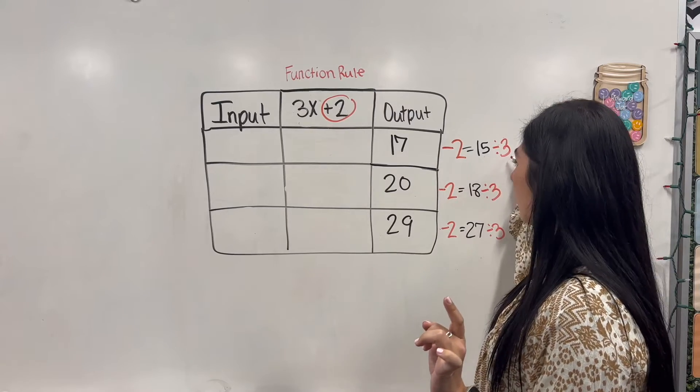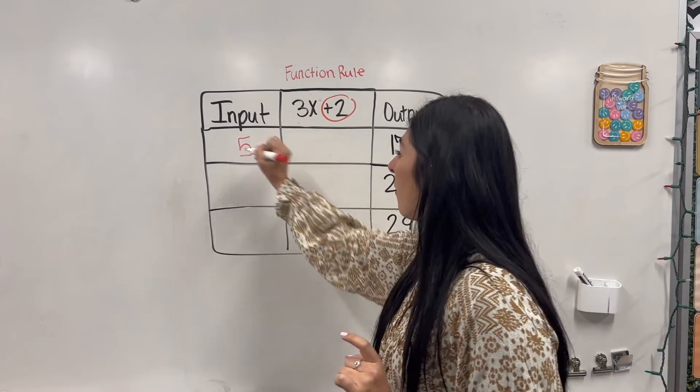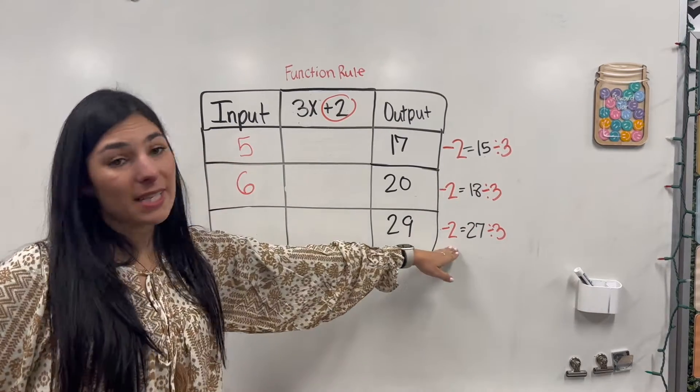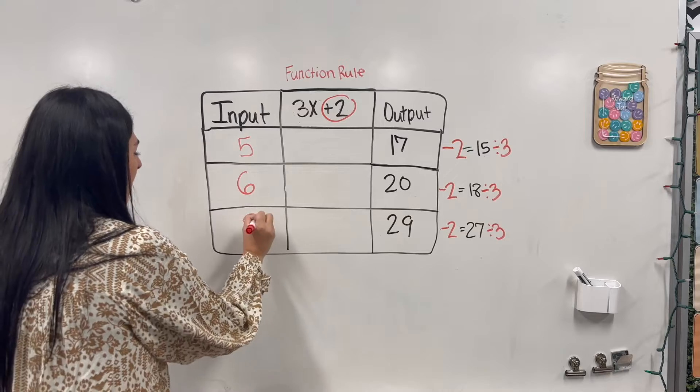So 15 divided by 3, that equals 5. 18 divided by 3 equals 6. And 27 divided by 3 equals 9.